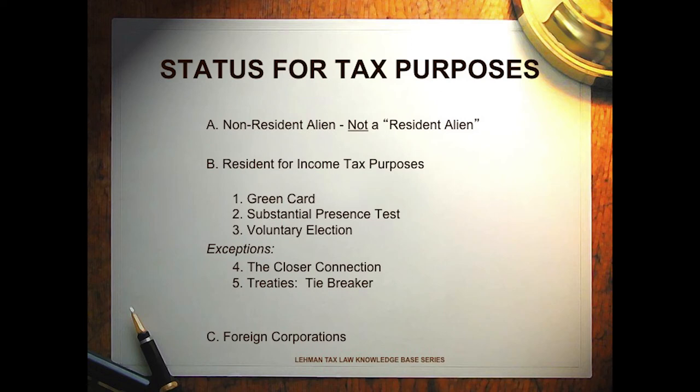There's another exception that has to do with tax treaties. We have many tax treaties all over the world with foreign countries. If you're from a treaty country and you come here and spend more than 182 days, you may still not be considered a U.S. resident depending upon the treaty we have with your country. Under the treaty, we look at several different elements to determine whether you were really here in a more permanent position.